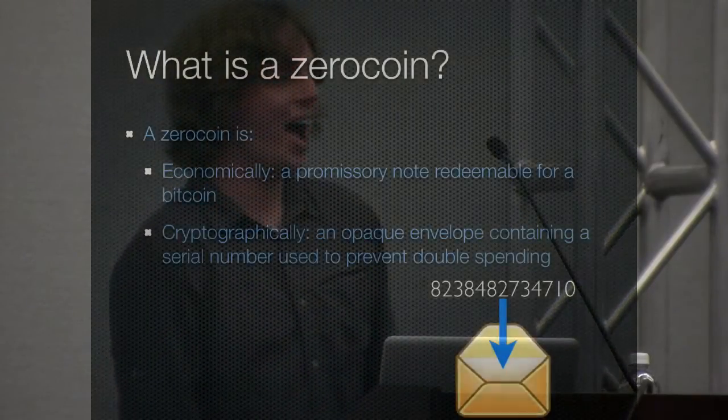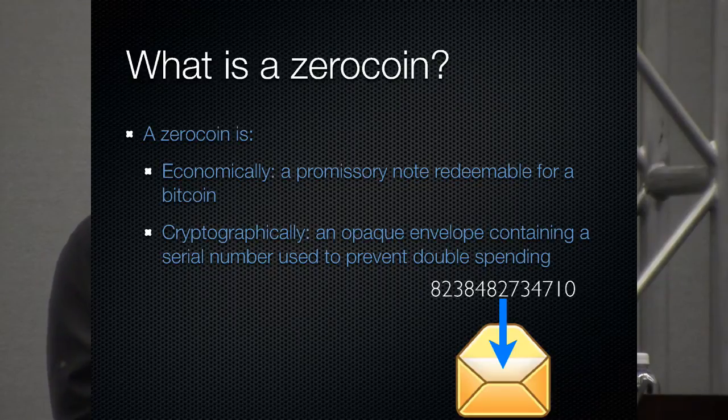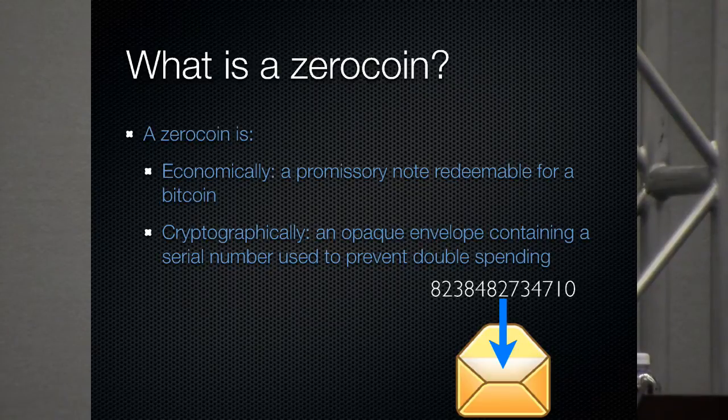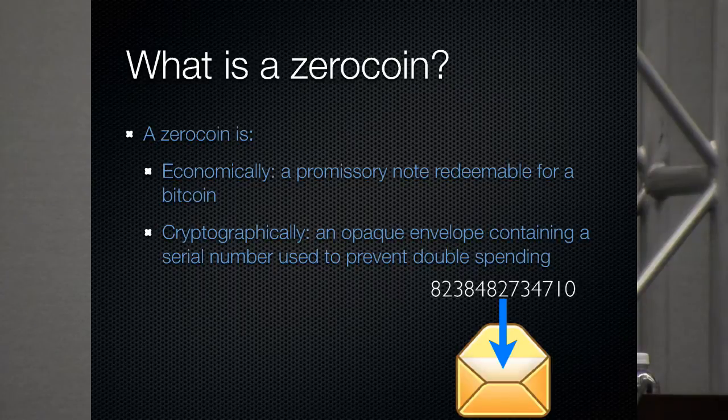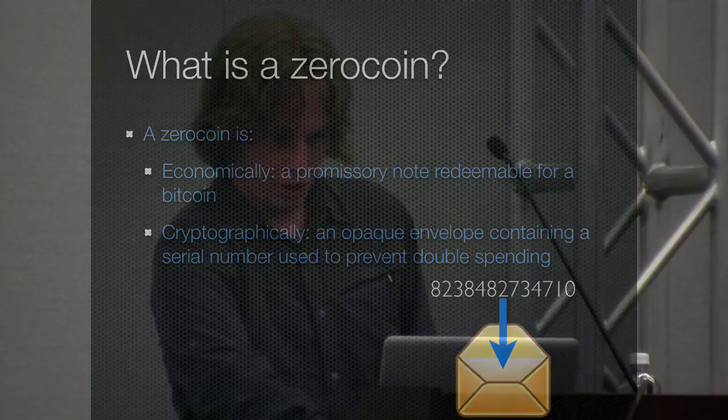So what is ZeroCoin? This is going to be a high-level talk. I don't want to get into the, bog down in the cryptographic details because they don't really have time. But as I said, ZeroCoin is economically a promissory note redeemable for Bitcoin. Cryptographically, it's another opaque envelope containing a serial number. The same double-spending techniques apply. You get the envelope, you can only use it once because you have to open it and reveal the serial number. You can make as many copies as you want, but that serial number is still the same and it's still one-time use. So you stuff a serial number in there. So how does this actually work? Well, we can't use blind signatures to do this because we have no central bank. There's no one who can hold a signing key. We want to be in a decentralized system.